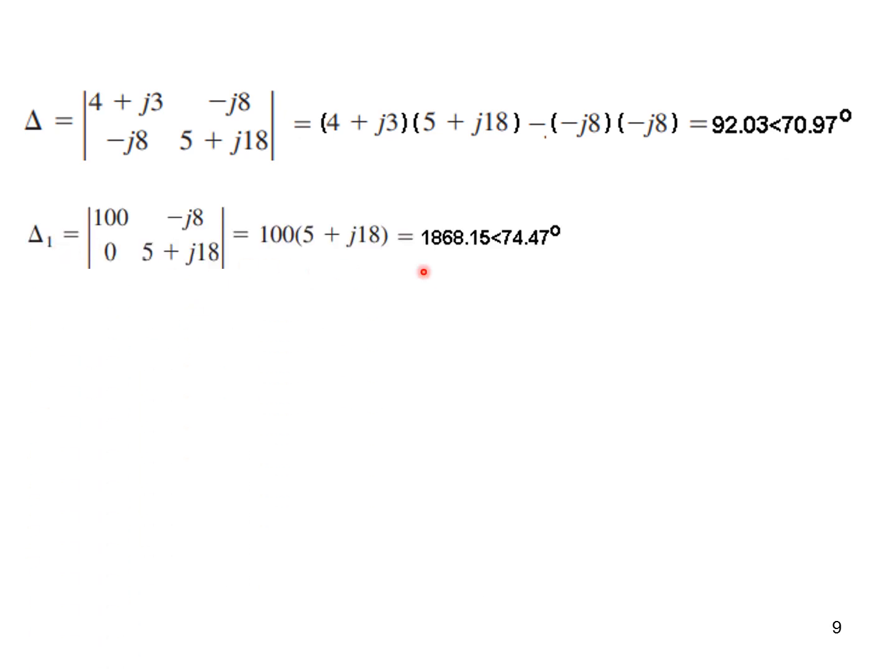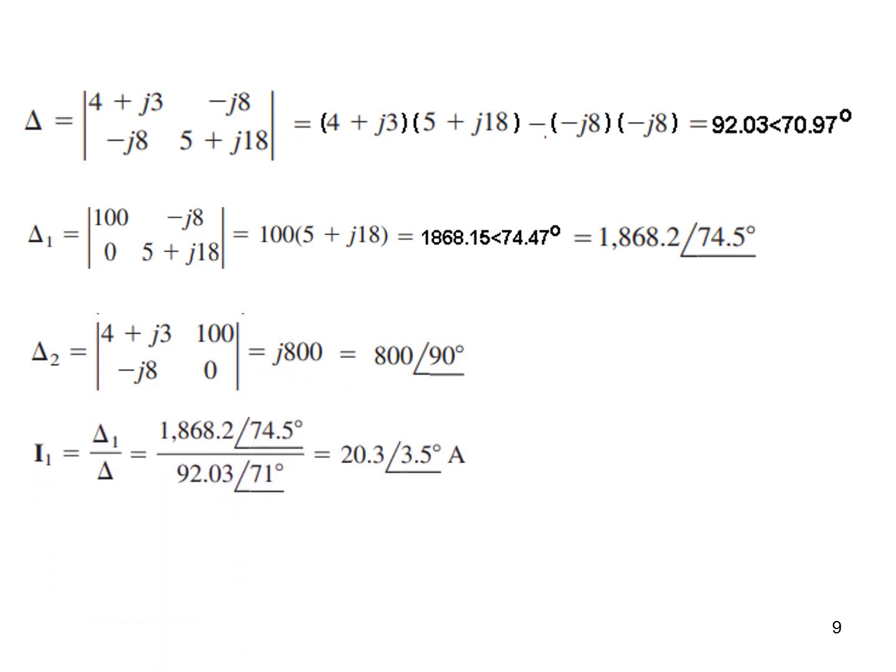And we can straight away convert into polar if you want. Delta 1, this is the value for delta 1. This is what is given in the book, which is very close to what we have. And similarly delta 2.